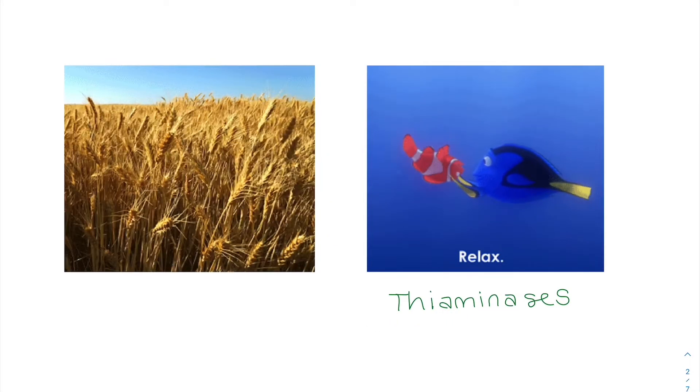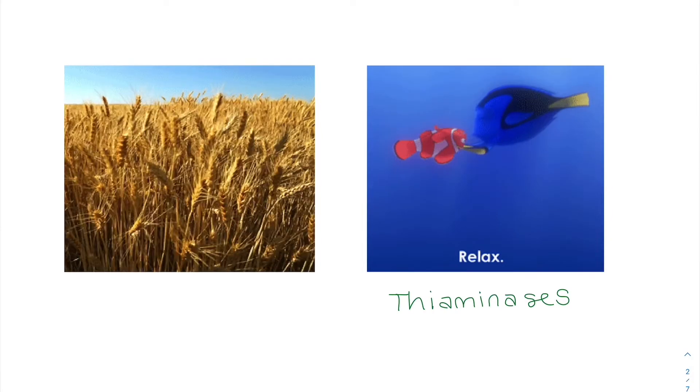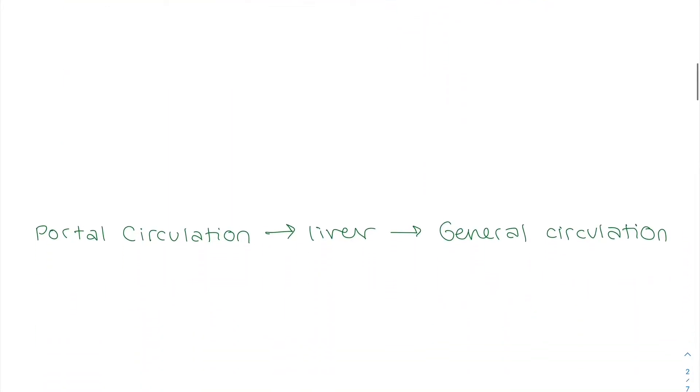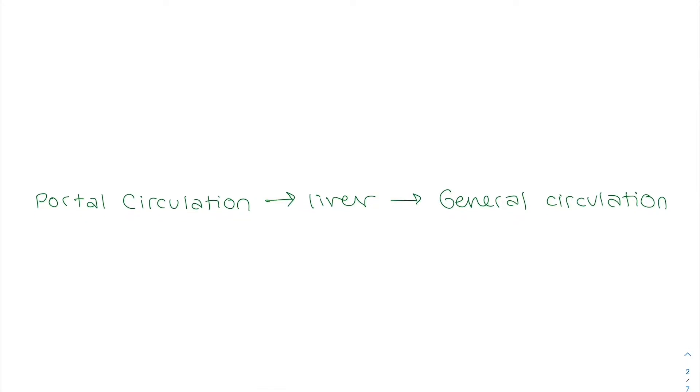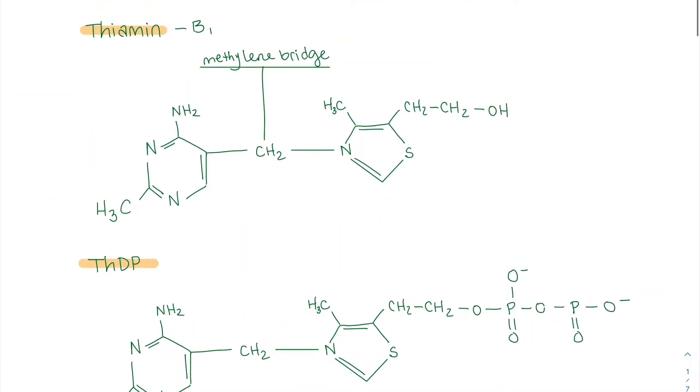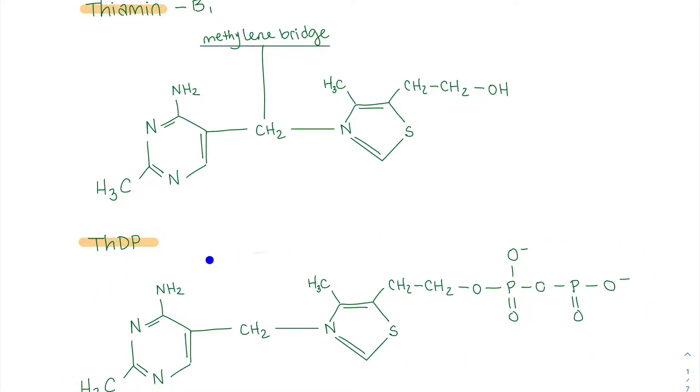So we eat it, and then it's absorbed into our body. It's mostly through passive diffusion, but we do have some active transport. If it's eaten in this THDP, and this does stand for thiamin diphosphate, but if it's eaten in this form, we have to take off these phosphates and just have this OH group in order to absorb it.